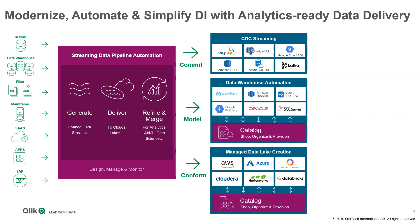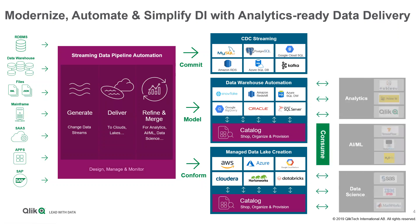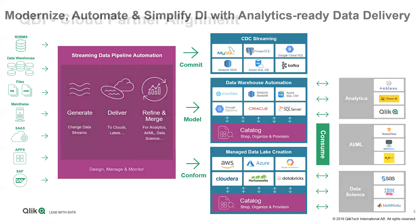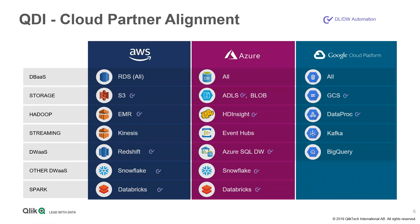We also offer a catalog so customers can catalog their objects — whether on the source, the target, or in a data lake — and get a shopping cart experience to provision data to their analytics tools like Qlik Sense. We're partners with all major cloud providers: AWS, Azure, and Google Cloud Platform. We support databases, data lakes, streaming technologies, Spark, and environments like Databricks.